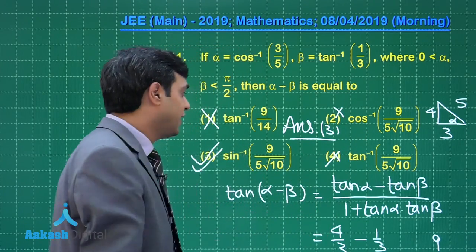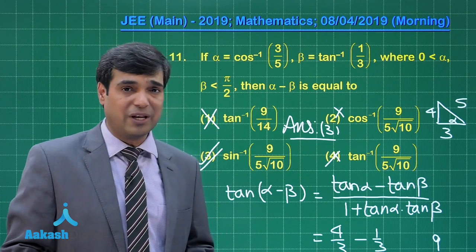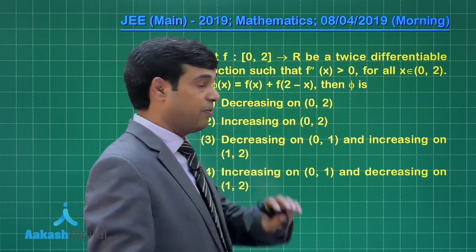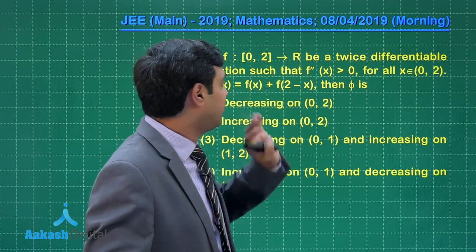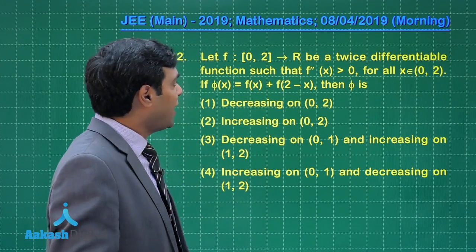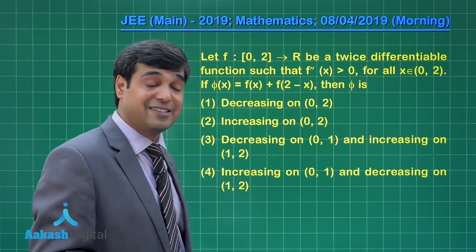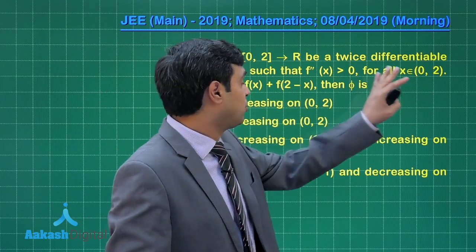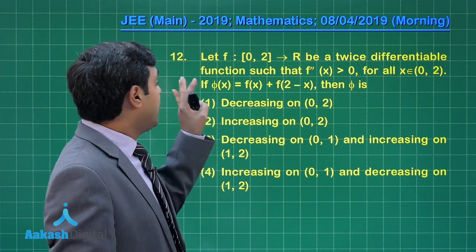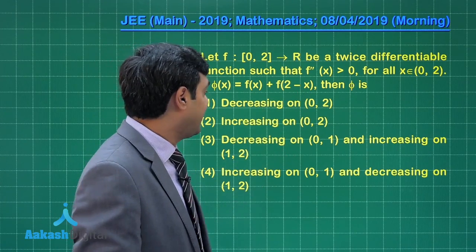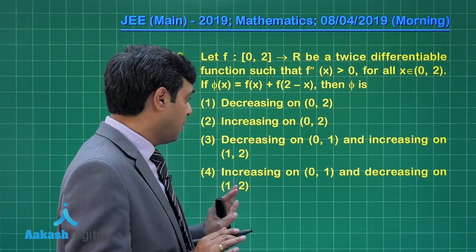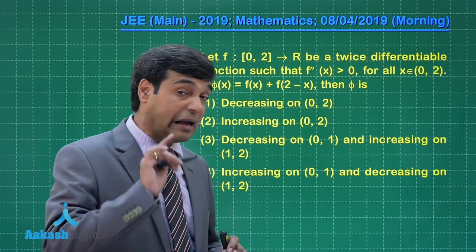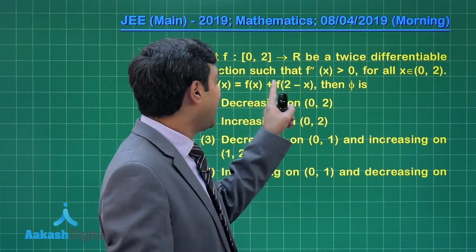Moving to question 12: f is a function from [0, 2] to real numbers, twice differentiable, such that f''(x) > 0 for all x in the open interval (0, 2). φ(x) = f(x) + f(2 − x). We need to determine the increasing/decreasing nature of φ.